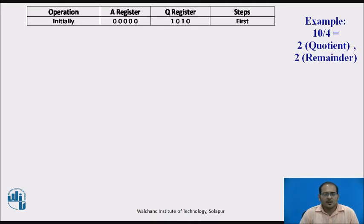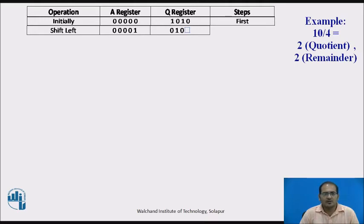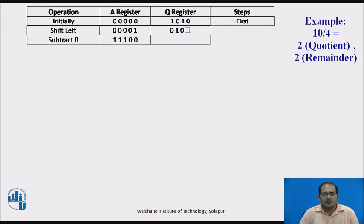As per the algorithm, we shift the content of A and Q registers left by 1 position. After the shift, the Q0 bit is vacant because 1 bit has been shifted left by 1 position. Next, we perform the A minus B operation — A already contains the shifted content, and we subtract B from it.